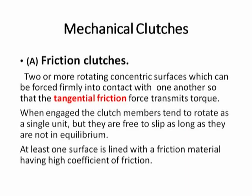Friction type mechanical clutches: two or more rotating concentric surfaces can be forced firmly into contact so that the tangential friction force transmits torque. When engaged, the clutch members tend to rotate as a single unit, but they are free to slip as long as they are not in equilibrium. At least one surface is lined with a friction material having a high coefficient of friction — that is the requirement. If both contacting surfaces have friction lining, they will work, but at least one of the contacting surfaces must have friction lining.